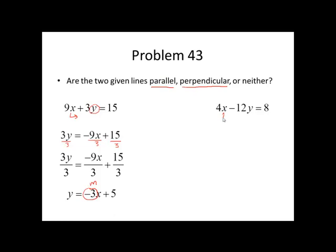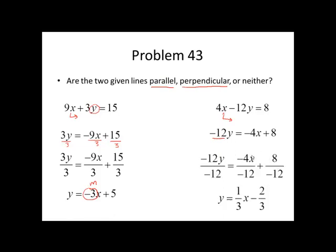First, we're going to get rid of the 4x, subtract that. Next, we want to divide by the coefficient of y, which is negative 12. And simplify each fraction. We get y equals one-third x minus two-thirds. The two-thirds doesn't matter. We only really worry about the slope here. It's a positive one-third. So, these two slopes are negative reciprocals and the lines are perpendicular.